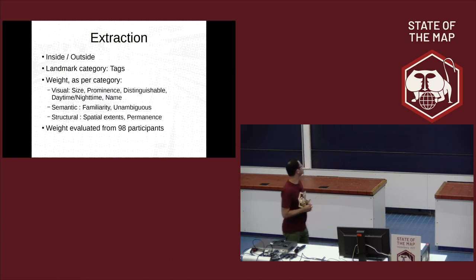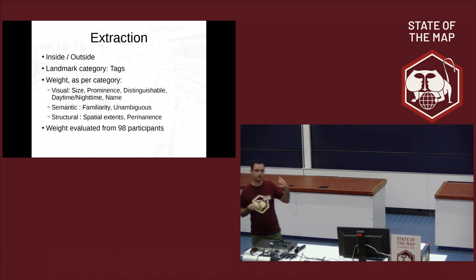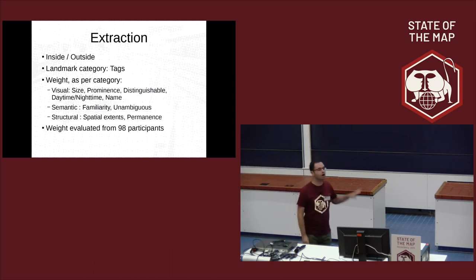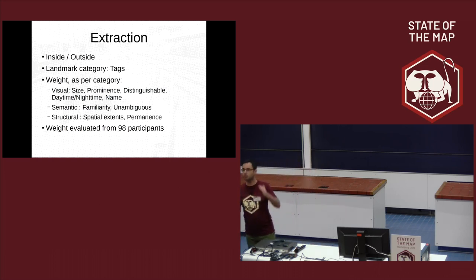And then some semantic and structural. Familiarity and unambiguousness is if I tell you something, if I tell you a pharmacy, you know what is a pharmacy. And unambiguous is if you think of a pharmacy, you will be able to see the pharmacy if you are at it. There are some elements easier to see than others. Pharmacy is easy. Emergency call phone may be red but may be small, so it may be hard to find.